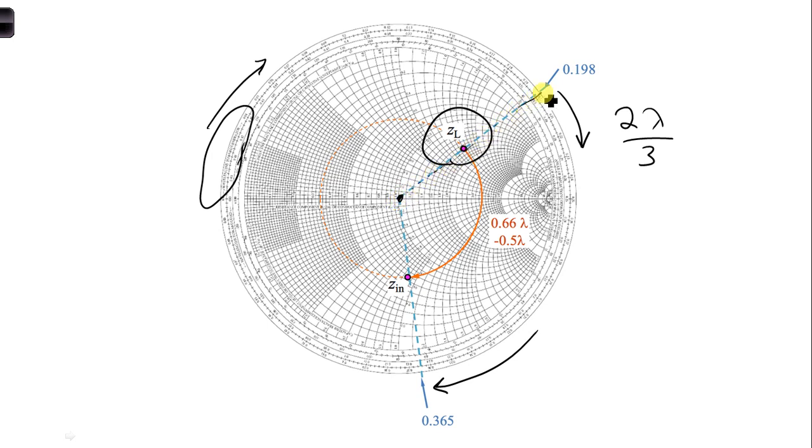So draw a straight line out. And you just have to make sure you're consistent with scale you're using on the outside. So let's go ahead and use the wavelengths towards the generator. We can read off the value here. It would be 0.198. So if we add on half and then the remainder, we should wind up at 0.365.